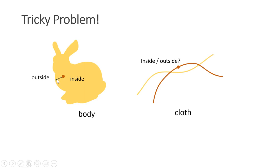Let me first explain to you why cloth self-collision is such a tricky problem. So let's assume we have a soft body. For a soft body, we know exactly what's inside and what's outside. So if we have a vertex inside the body, we know exactly how to resolve the collision and where this vertex has to go.